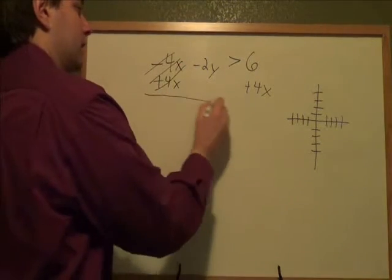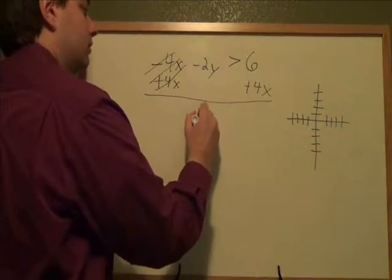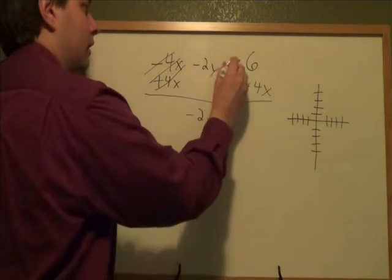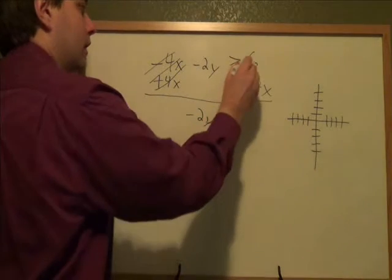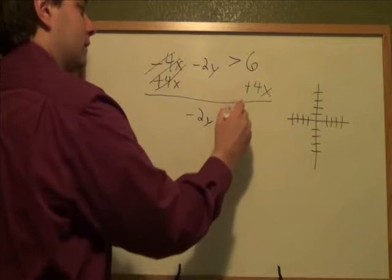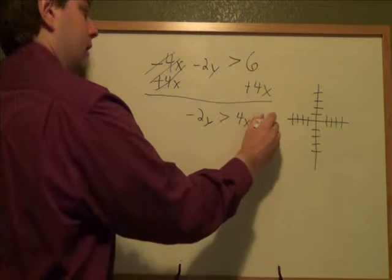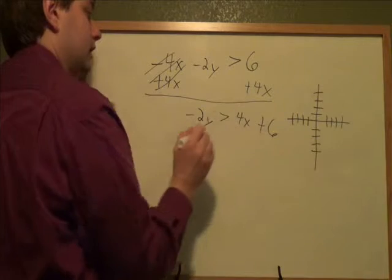Plus 4x and minus 4x cancel. Negative 2y is still negative 2y. Greater than is still greater than. And then 6 plus 4x, you just write 4x plus 6. Those are not like terms, they don't add together.